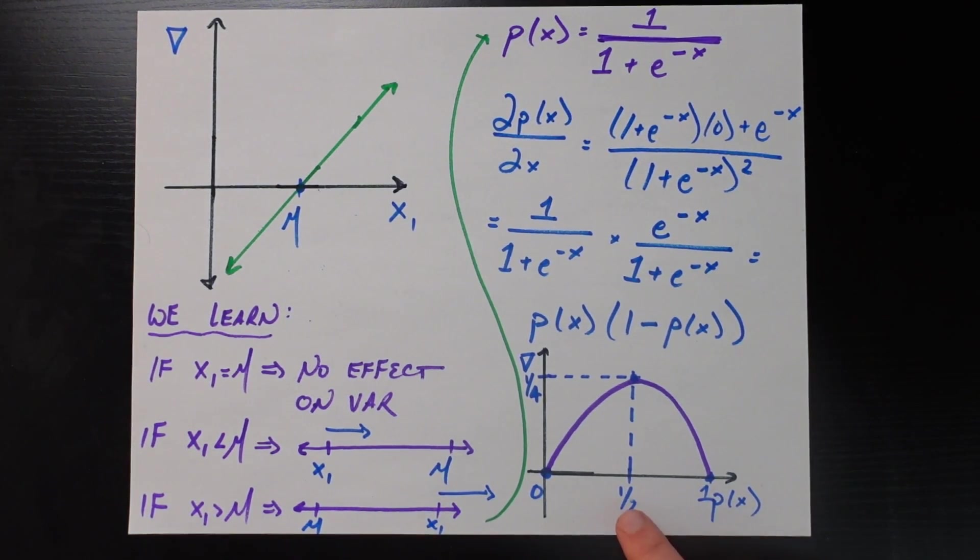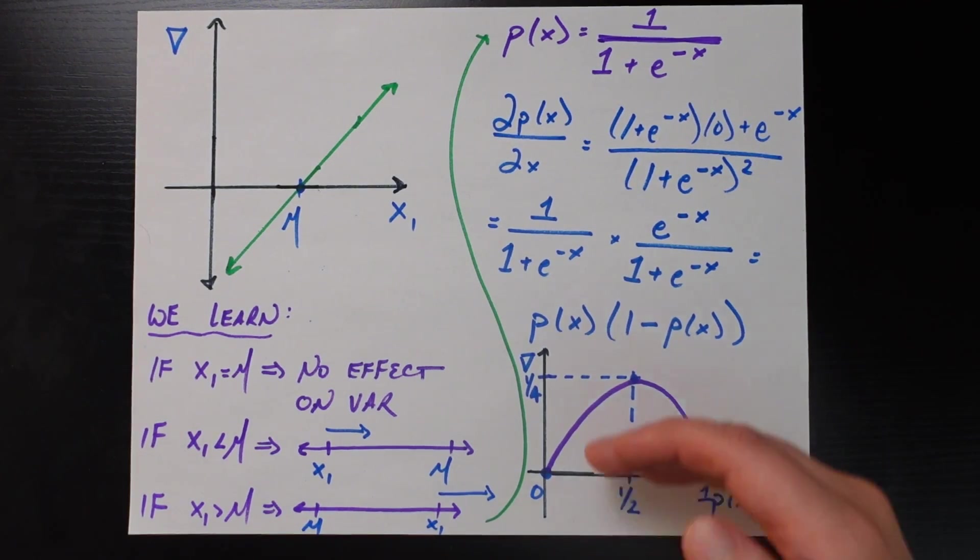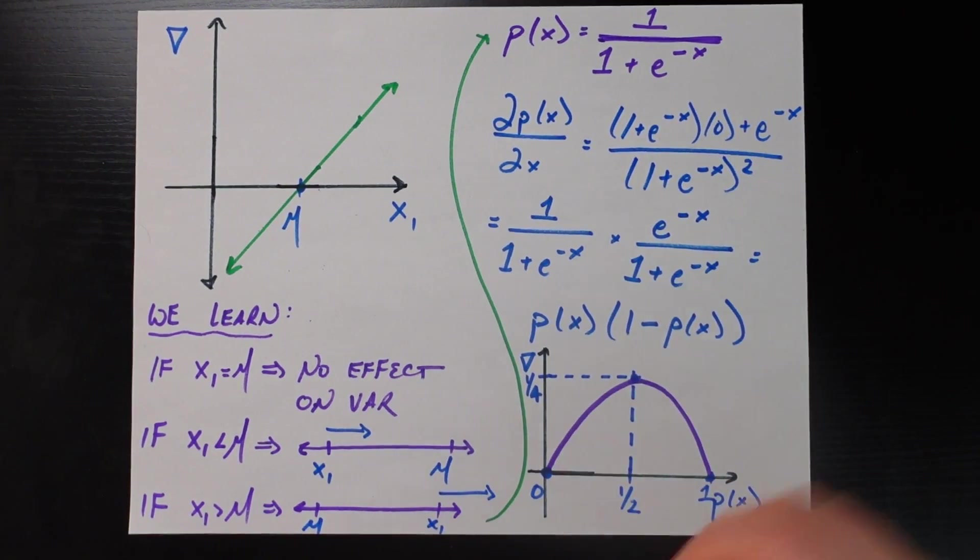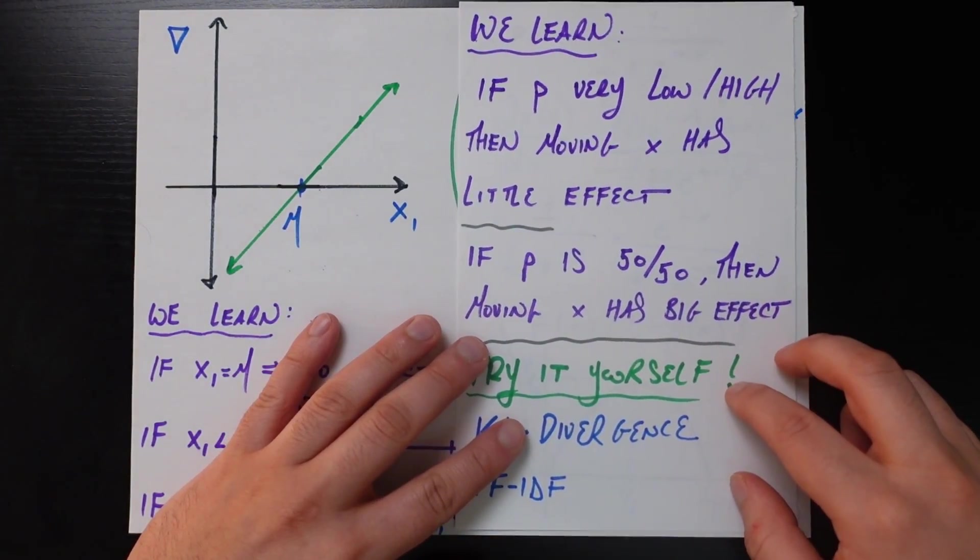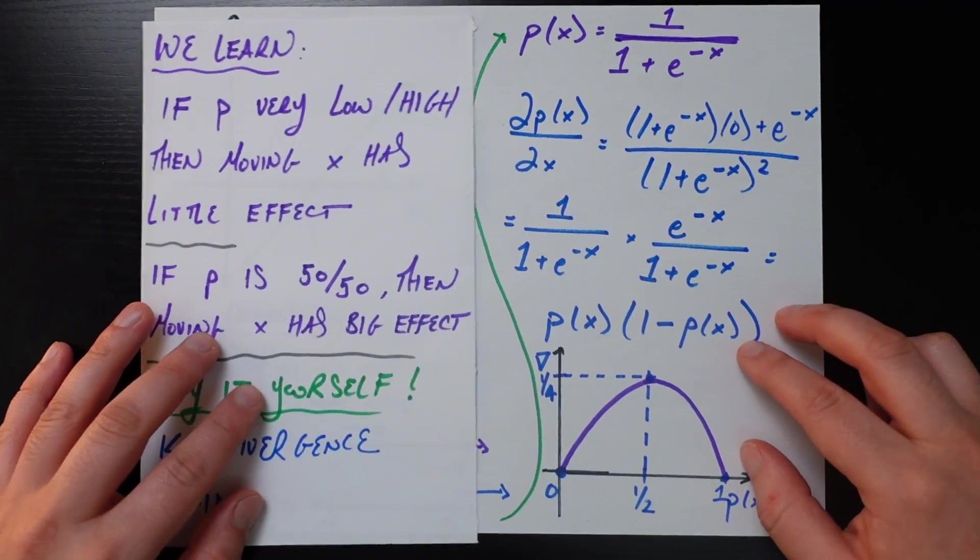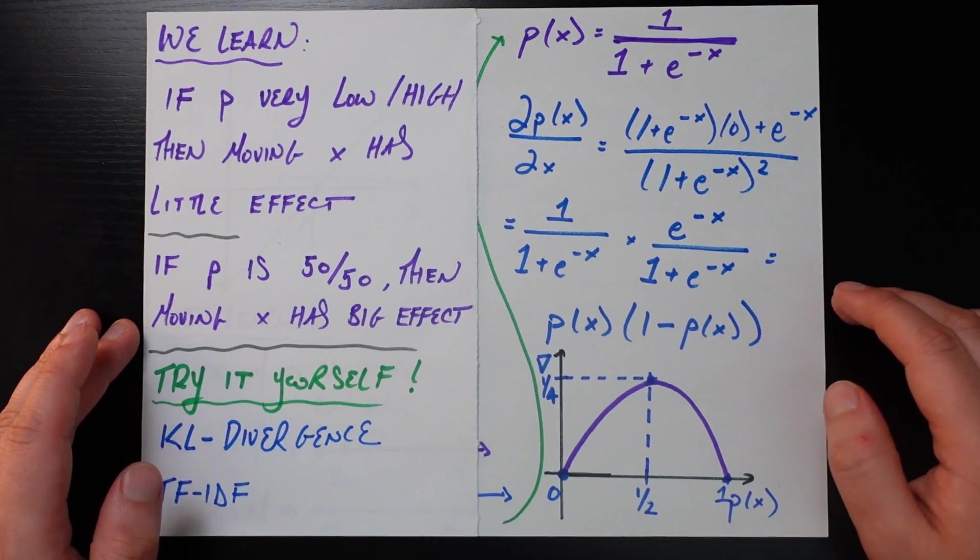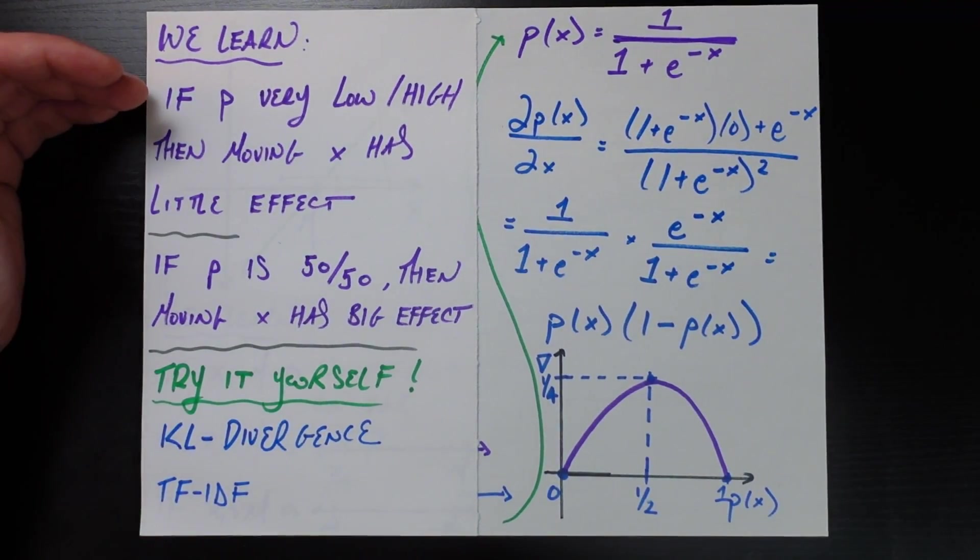And so what story is that trying to tell? The story that's trying to tell, we learn from doing this derivative exercise, let me put this on this side of the piece of paper. What we learn is that if the probability for some given x is already very low, so very close to zero, or very high, so very close to one to begin with, then moving that x, increasing that argument, that feature x by a little bit, is going to have little to no effect.